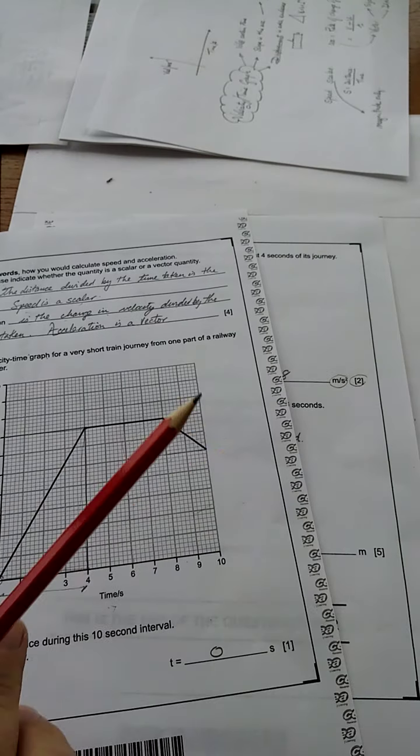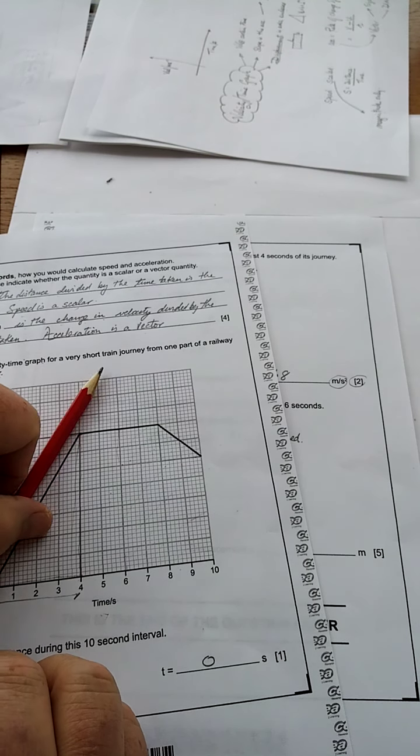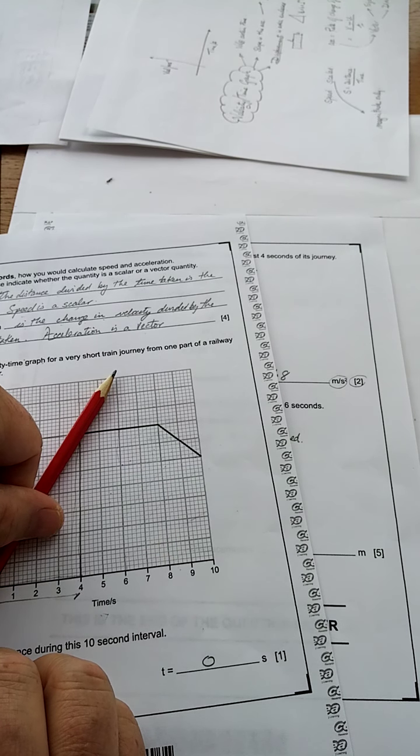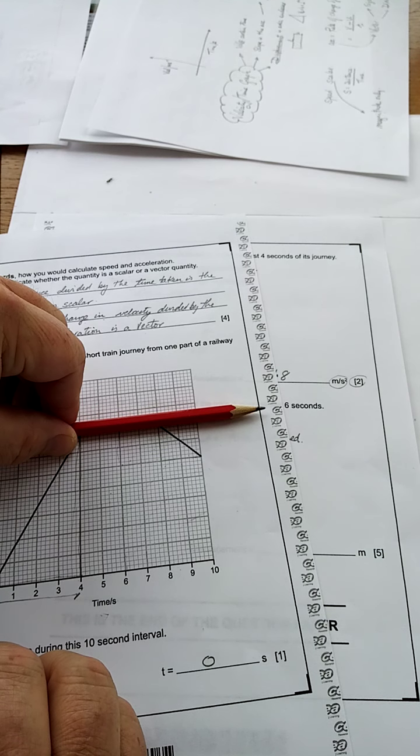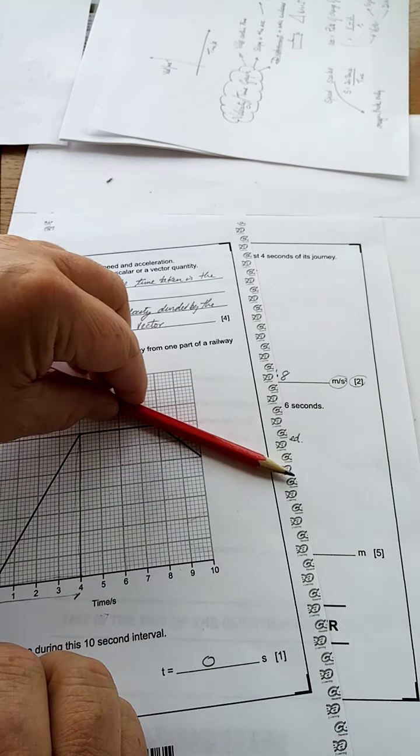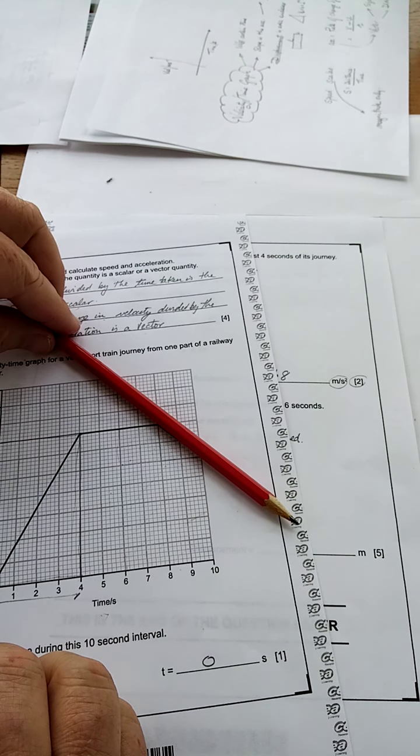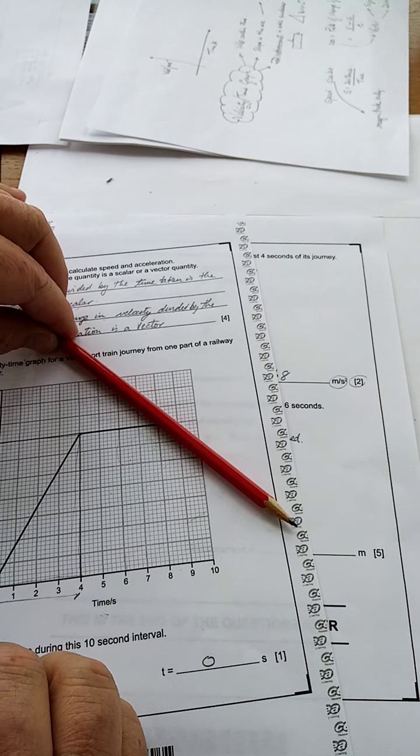Can I get the train's acceleration? Look. It accelerates there. So the forces are unbalanced. It goes along there at a constant speed. The forces are in equilibrium or balanced. It decelerates here. The forces are unbalanced. The drag is greater than the force of the engine.